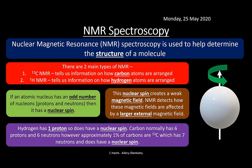Hydrogen has one proton, so it has a nuclear spin (odd number of nucleons). Carbon normally has six nucleons, but a small percentage — about 1% — is carbon-13, which has an odd number of nucleons and thus has a nuclear spin. For NMR spectroscopy, proton NMR detects H-1 (plentiful), while carbon NMR only detects carbon-13, not carbon-12, because carbon-12 has an even number of nucleons.